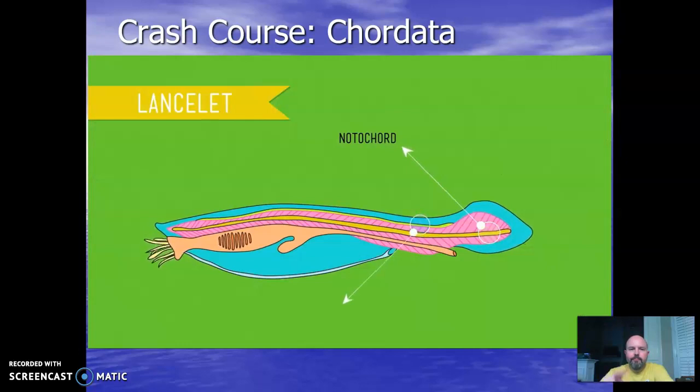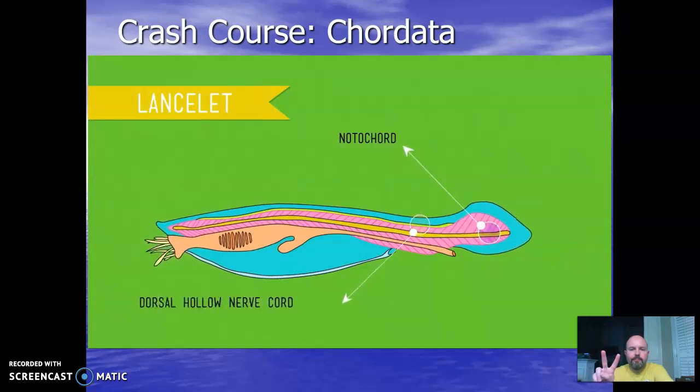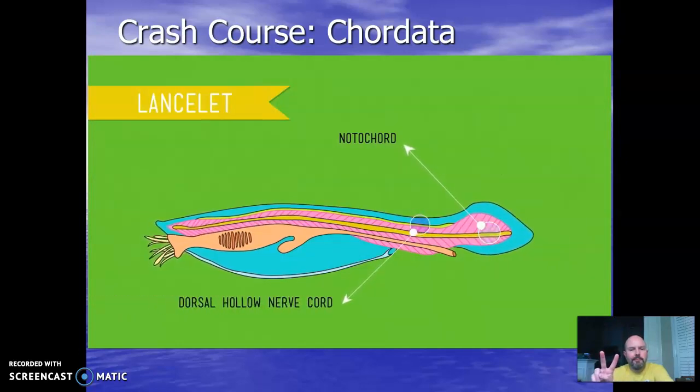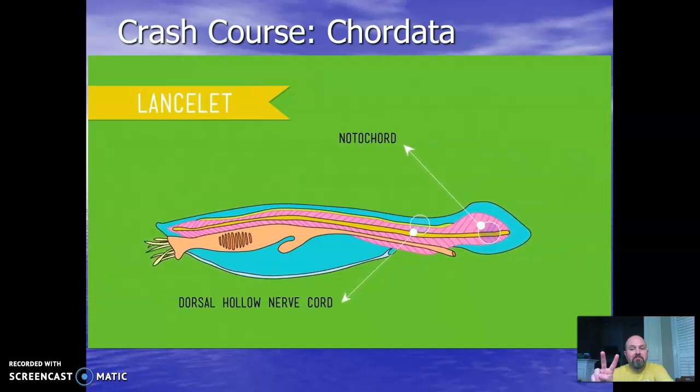Second, we have the nerve cord itself, called the dorsal hollow nerve cord — a tube made of nerve fibers that develops into the central nervous system. This is what makes chordates different from other animal phyla, which have solid ventral nerve cords, meaning they run along the front or stomach side.